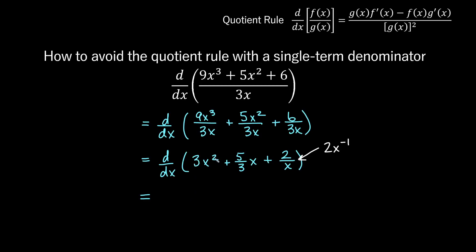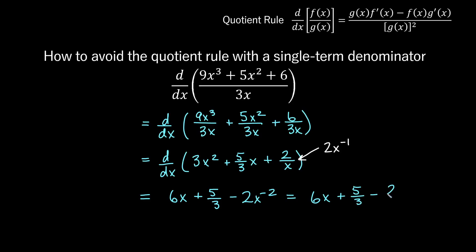The derivative of 3x squared by the power rule: 2 comes out, giving 6, and the power drops by 1, so we get 6x. For the next term, 5 thirds x to the 1 — the 1 comes out, leaving 5 thirds, and the power drops to zero, so we just get 5 thirds. For the last term, power rule on 2x to the negative 1: the negative 1 comes out and multiplies 2, giving minus 2, and the power decreasing by 1 gives x to the negative 2. So our answer is 6x plus 5 thirds minus 2 over x squared, where the negative power means reciprocal of x squared.